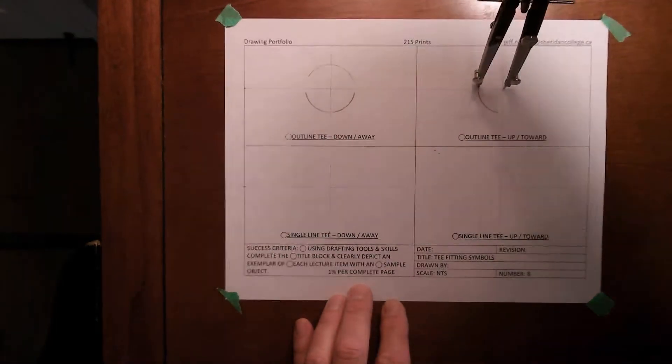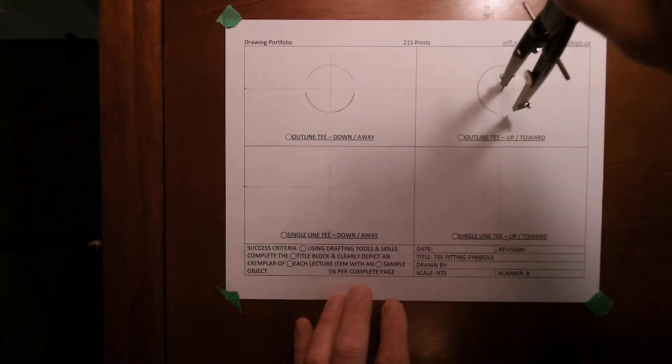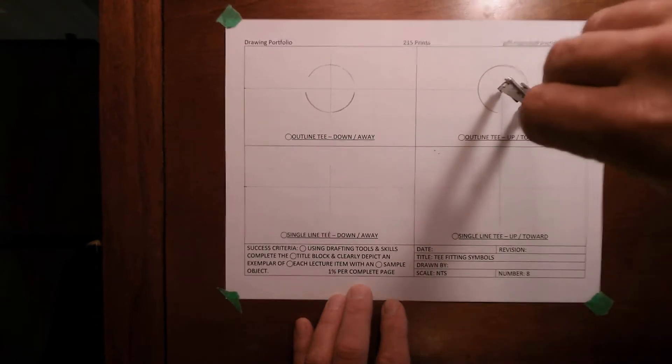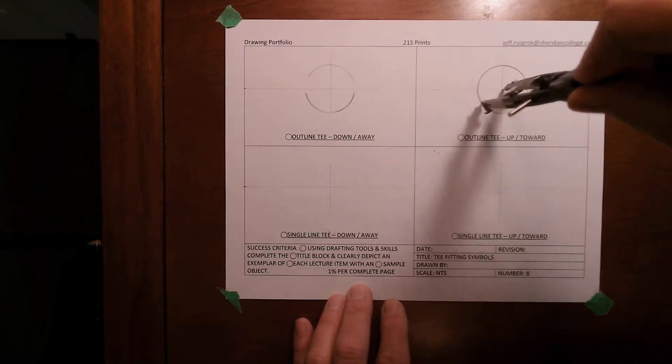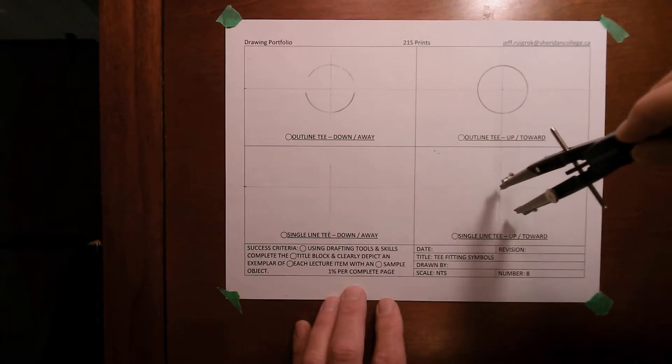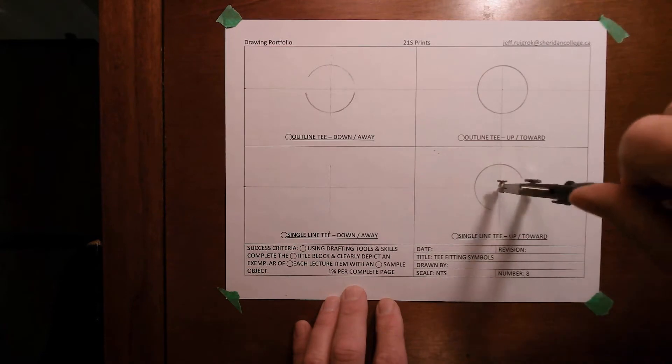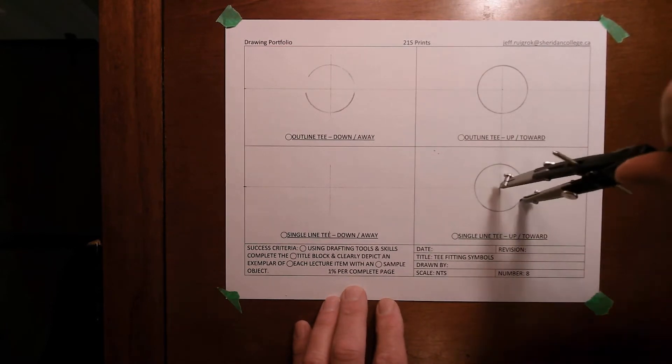So this is going to be the 90 down and away. So most of the circle will be erased, except for the outsides of it. This circle is the up towards, so I'm going to see this fitting entirely.